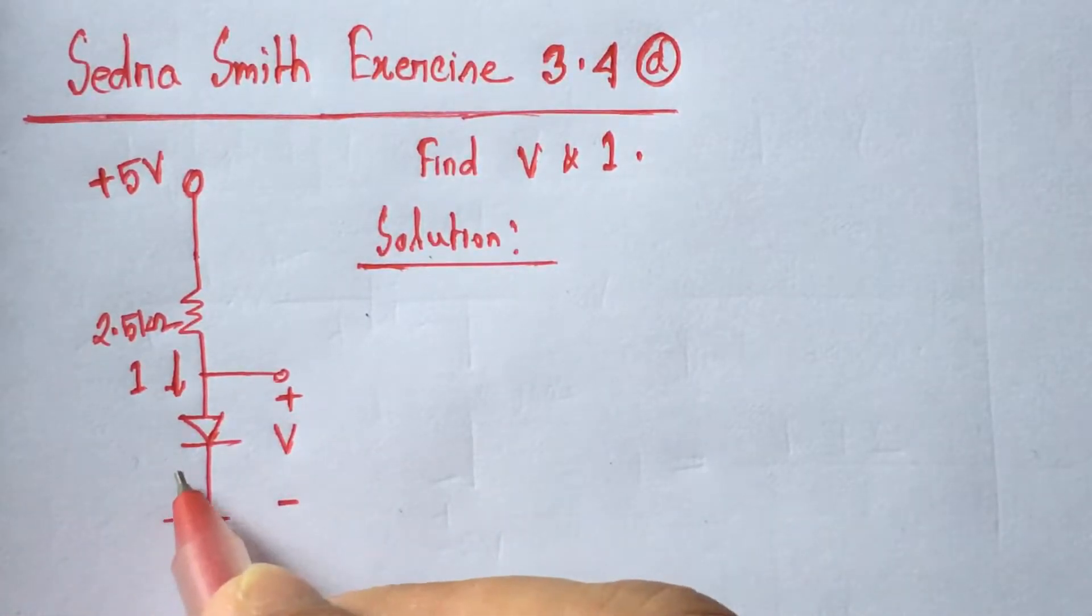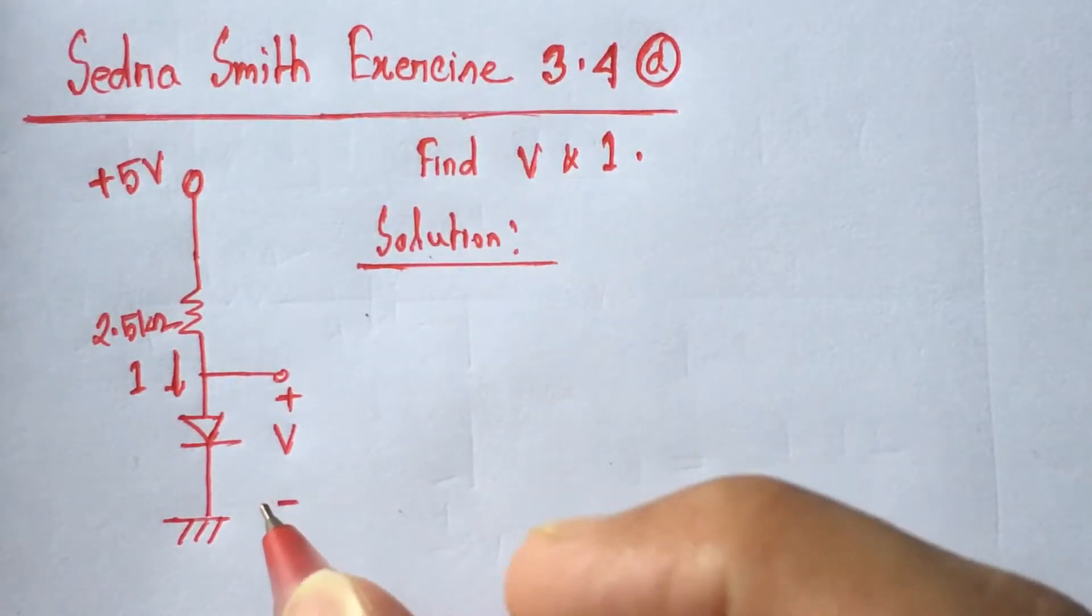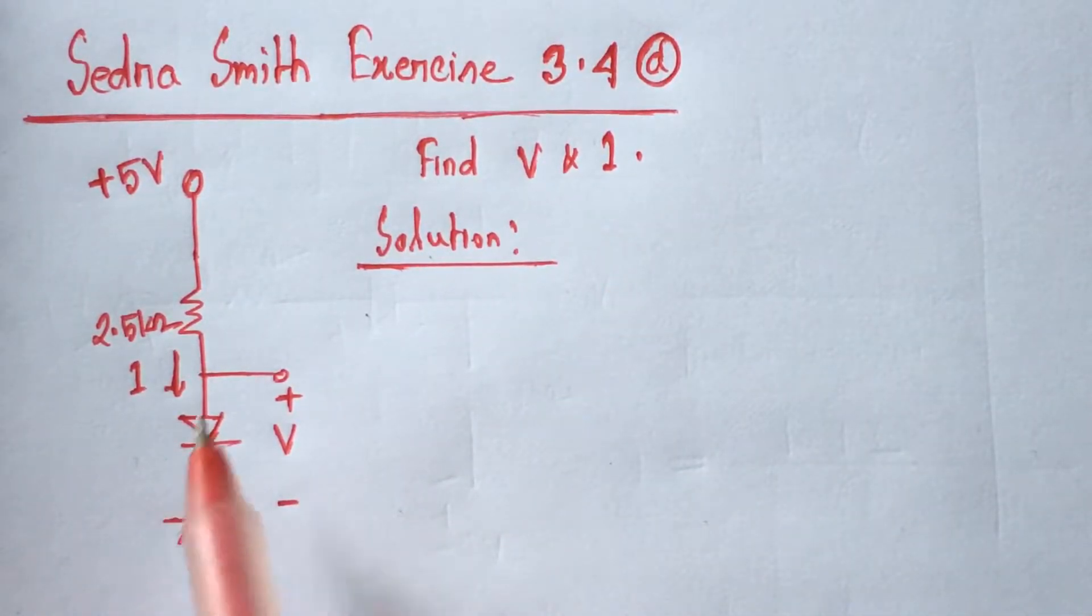The diode given here is an ideal diode. Since it's an ideal diode, the voltage drop across it is zero. First, we have to identify whether the diode is conducting or not—whether the diode is in on state or off state.